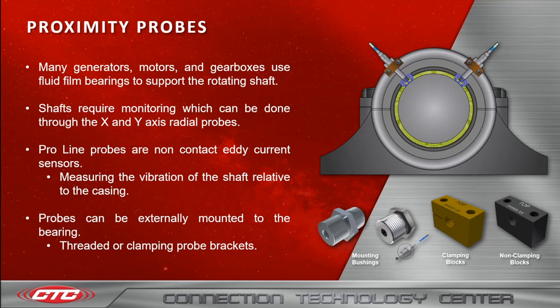The probes are mounted 90 degrees apart for the X and Y axis readings. Our ProLine probes are non-contact eddy current sensors which measure the vibration of the shaft relative to the casing. Our probes can be externally mounted to the bearing using threaded or clamping probe brackets, as shown in the bottom right.